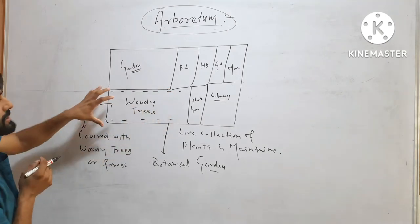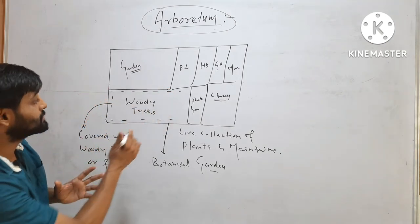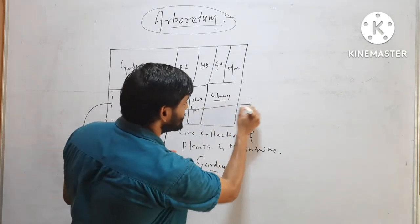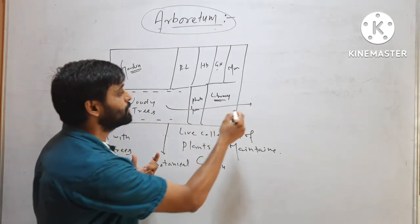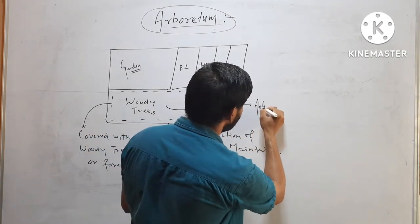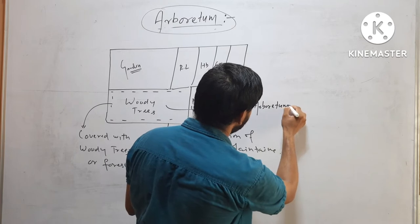Suppose this is an area, this large area that is covered with woody trees. This area that is covered with woody trees will be called Arboretum.